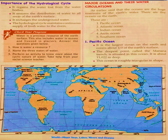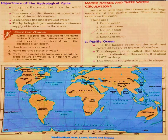Now we have the topic: importance of the hydrological cycle. This cycle regains the water lost from water bodies — whatever water is lost through evaporation comes back through rainfall and precipitation. It ensures the distribution of water to all areas of the earth's surface. It also recharges underground water and maintains a continuous supply of fresh water to the rivers. Notably, rainwater is the purest form of water.